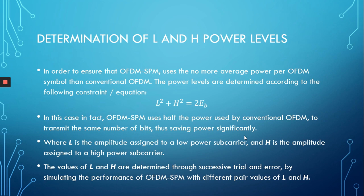Furthermore, how can we assure that the power used by OFDM-SPM does not exceed that of conventional OFDM? To tackle this, we have the mathematical constraint L² + H² = 2E_B, meaning the low-power amplitude value squared plus the high-power amplitude value squared equals 2 multiplied by E_B — the energy per bit, normalized to 1. By following this constraint, we assure that OFDM-SPM transfers twice the bits using the same power as conventional OFDM, meaning OFDM-SPM is effectively saving half the power.